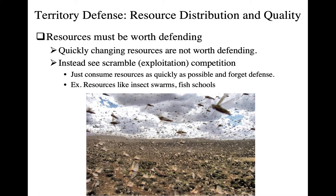Let's think about situations where defense may not be worth it. If we're talking about a resource that can change quickly, that's probably not going to be worth defending. If you're an insectivore relying on swarms of insects that move day to day, you can't defend a set territory boundary — it doesn't make sense. Instead, what we see is what's called scramble or exploitation competition: you're simply using those resources as quickly as you can and not worrying about defense. This is usually associated with resources that are really abundant anyway, so there's more of it than you can eat yourself.